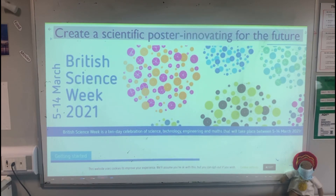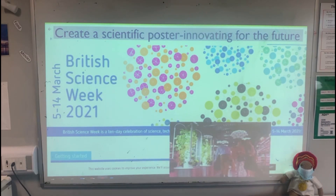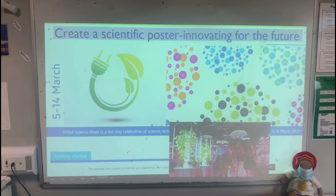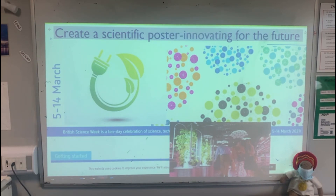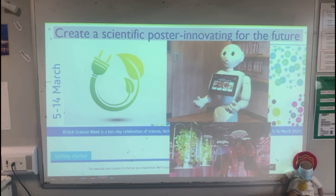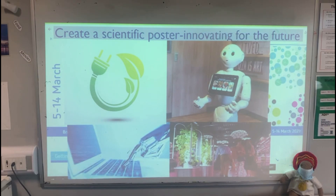The topic has to be 'innovating for the future', but it's totally up to you what you want to do. For example, you might want to look at how we're going to grow plants in the future to feed people — that's a picture of vertical growing towers. You might want to think about energy, or robots and how robots can help us, or computers. As long as it's on the topic 'innovating for the future', it is totally up to you. Best of luck — deadline is the 14th of March.